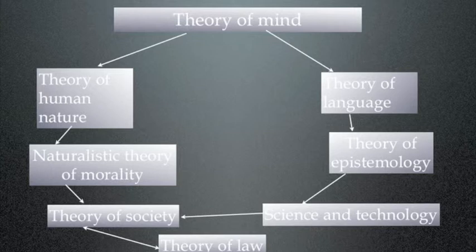And from that we get a theory of society and then a theory of law and law and society interact. On the right-hand side of your screen, I've got a theory of language, which we'll have a look at shortly. That leads to a theory of epistemology and then to science and technology, which of course interacts with society as we know it.